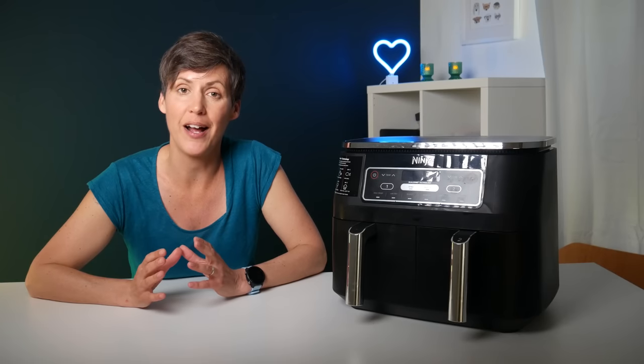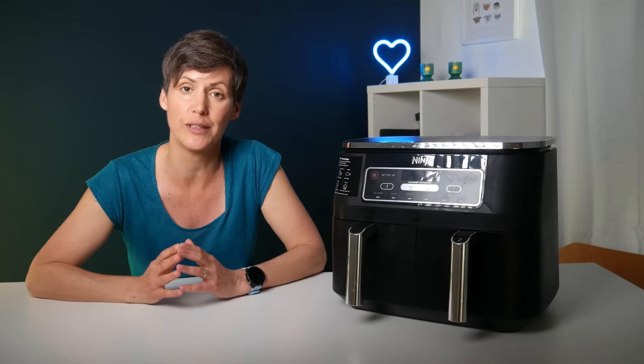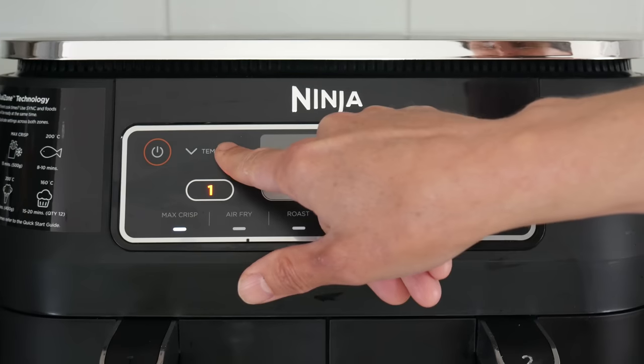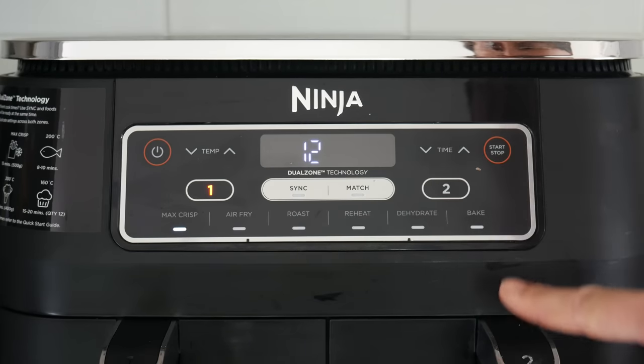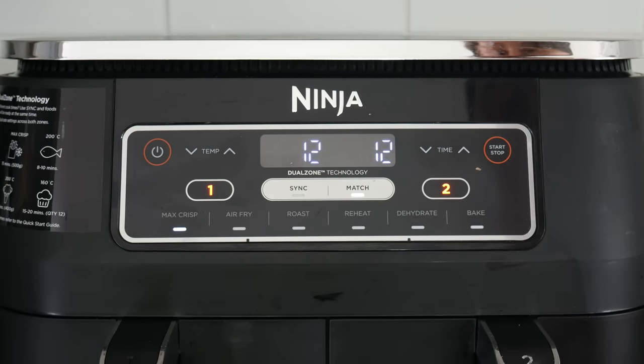If you're going to set up your air fryer and want to have both drawers cooking at the same duration, the same cooking setting and the same temperature, there is a feature called match. If you press that it automatically duplicates the settings that you've put into one zone onto the second zone.